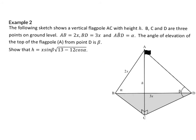Example 2. The following sketch shows a vertical flagpole AC with a height of H. B, C and D are points on ground level. And they've already indicated for us then our to 90 degree angle, because we have a vertical plane and a horizontal plane. So, here the sketch is flipped around to what we saw in our previous example and the previous video. They also give us that AB is 2x, BD is 3x, and they give us angle ABD as alpha.